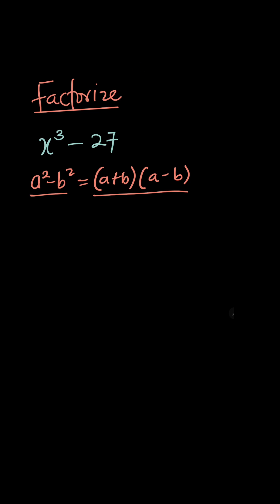In this case we have to apply another formula just like the difference of two squares. But now we are going to use difference of cubes, because this is x cubed minus 27, and 27 can be written as 3 cubed. So it makes 27 a cube number.